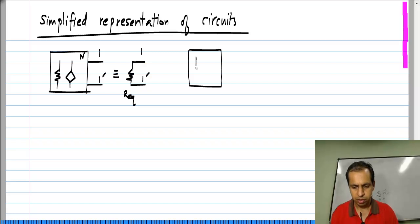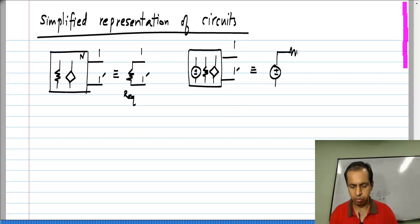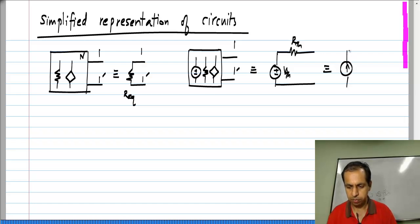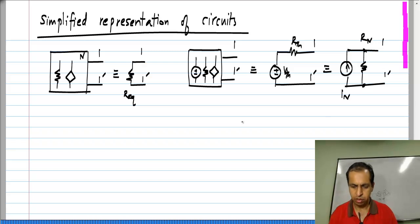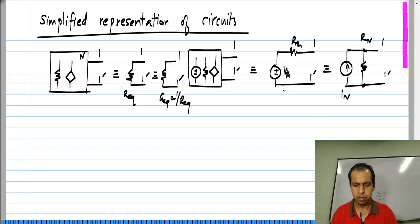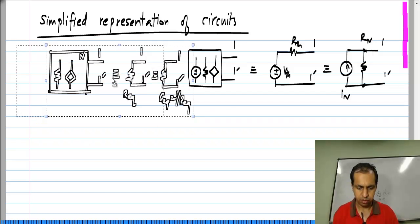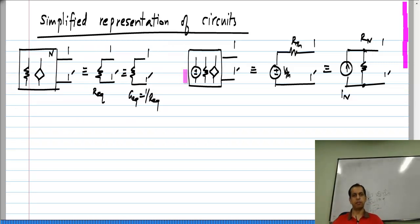Similarly, if we have independent sources, resistors, and control sources, it is equivalent to a voltage source in series with a resistance, which is also equivalent to a current source in parallel with a resistance. Instead of specifying the equivalent resistance, you could also specify the equivalent conductance. You may be wondering why so many alternatives are necessary — I will show you very simple examples where some of them are legitimately defined and others are not.